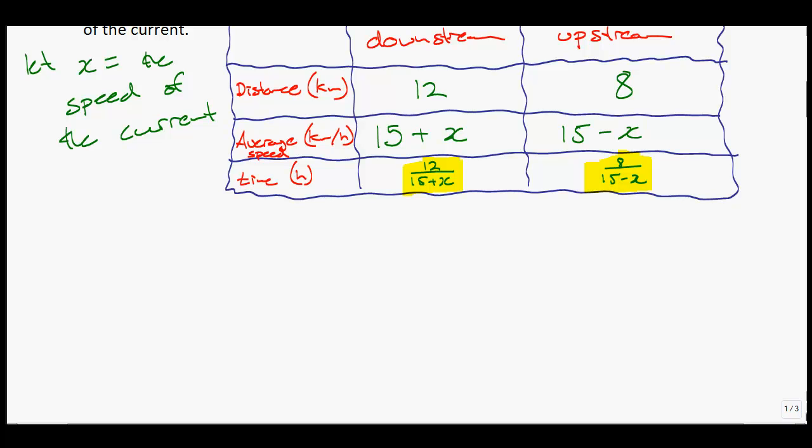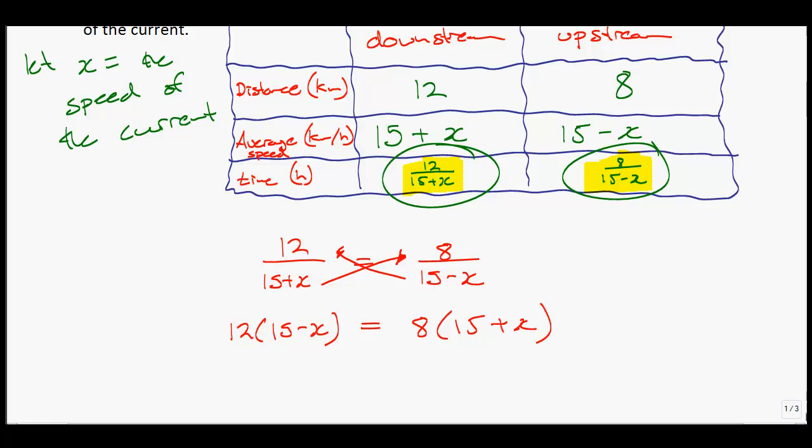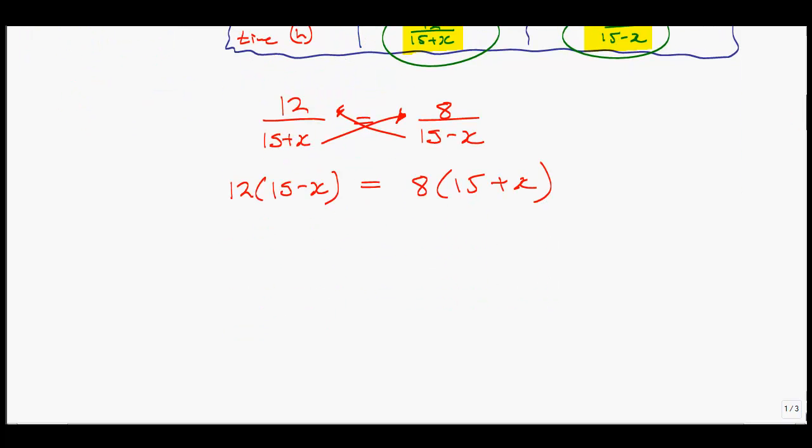So I have 12 all over 15 plus X equals 8 onto 15 minus X. I'm going to achieve a common denominator. When you have A over B equals C over D, you can use cross multiplication. I'll now have 12 all multiplied by 15 minus X equals 8 all multiplied by 15 plus X.